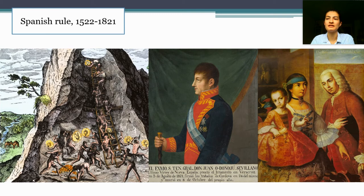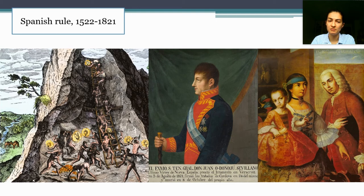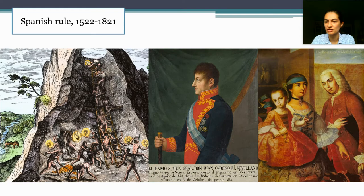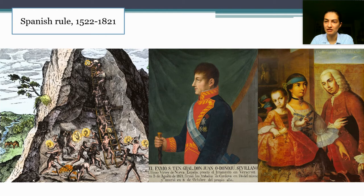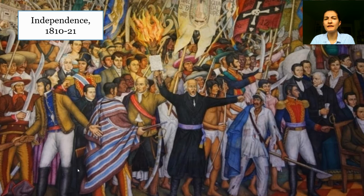The final feature of Spanish rule worth pointing out is that the racial system is somewhat different from the one that develops in British colonies in North America. Because the Spaniards who came to the New World were primarily men rather than intact family units, you see a lot more intermarriage between people of European, indigenous, and African descent. That creates something not necessarily any less racist than the North American system, but with blurrier lines and more numerous racial categories — what in AP World we call the casta system. It also explains the large percentage of people in Mexico today who identify as having that unique mix of European and indigenous heritage.